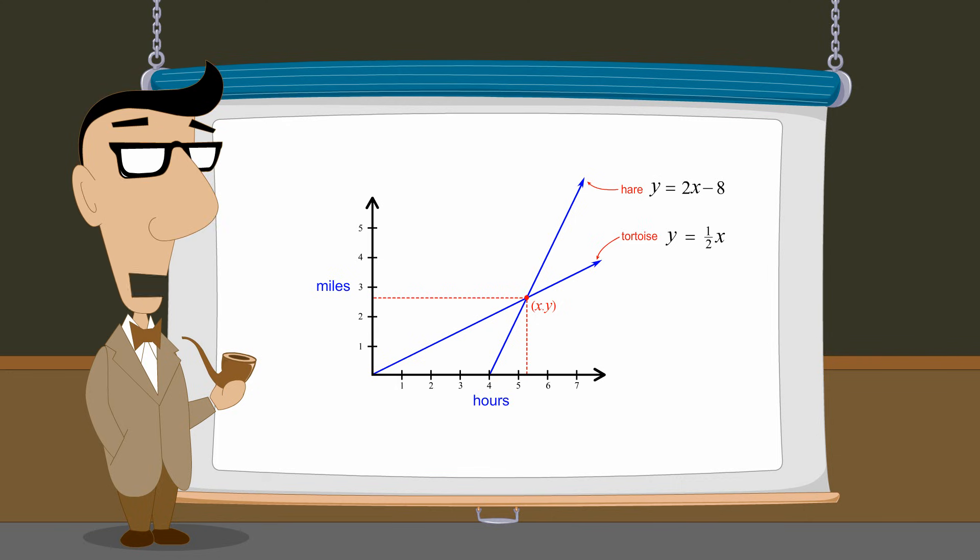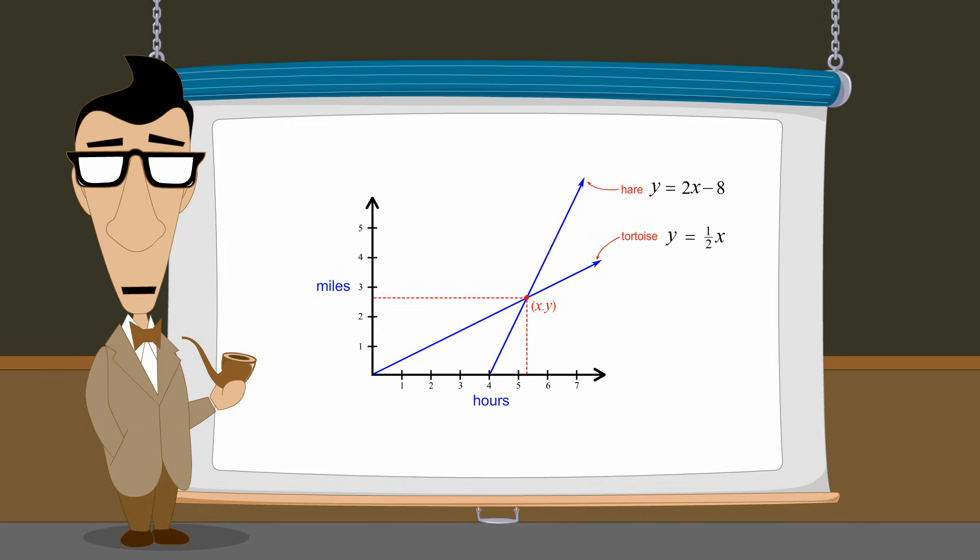There are several different mathematical methods which can be used to find the points of intersection of two graphs. In this lecture, we will demonstrate a method called substitution.